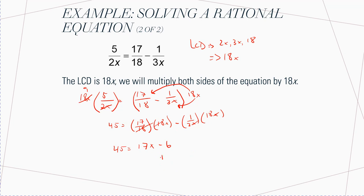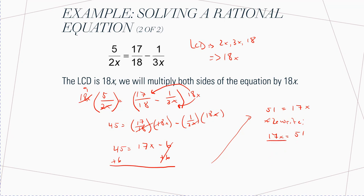Now this is just a linear equation. I'm going to add 6 to both sides: 45 plus 6 gets me 51 is equal to 17X. So 17X equals 51. Divide both sides by 17 — the 17s cancel — and 51 divided by 17 is 3. You can check this by plugging it in. The process is: find the LCD, put everything over the LCD, simplify, and you're left with just a linear equation.